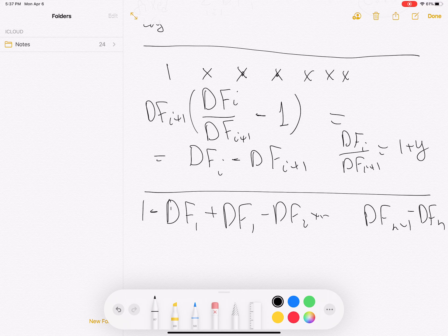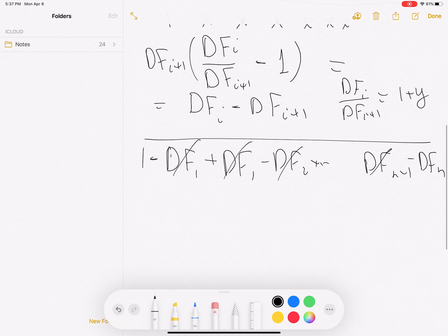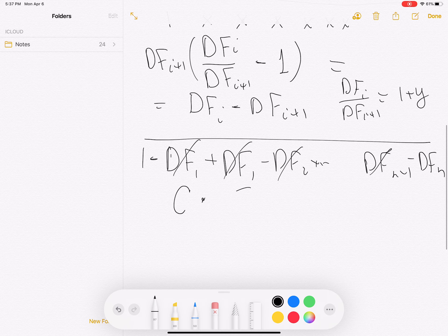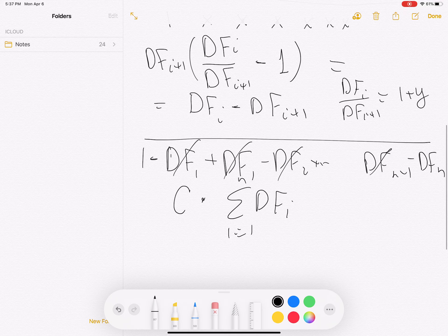You can see that all these guys are canceling. So we are going to get the following equation: we are going to get C times the sum of the discount factors equals 1 minus DFn.